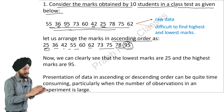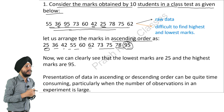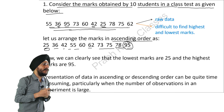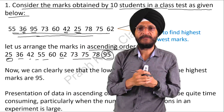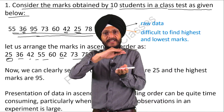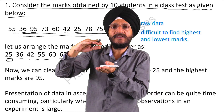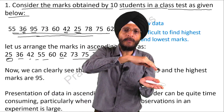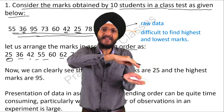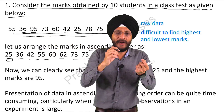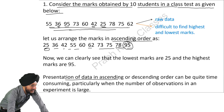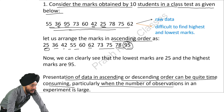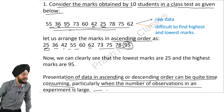Presentation of marks in ascending or descending order is useful and easy when we have to present data for only a few students. But if we have to present data for say 200 or 300 students, this form becomes quite difficult. Presentation of data in ascending or descending order can be quite time-consuming, particularly when the number of observations in the experiment is large.